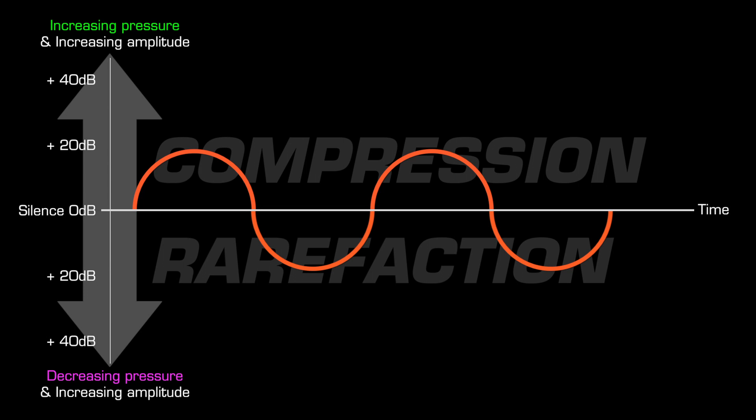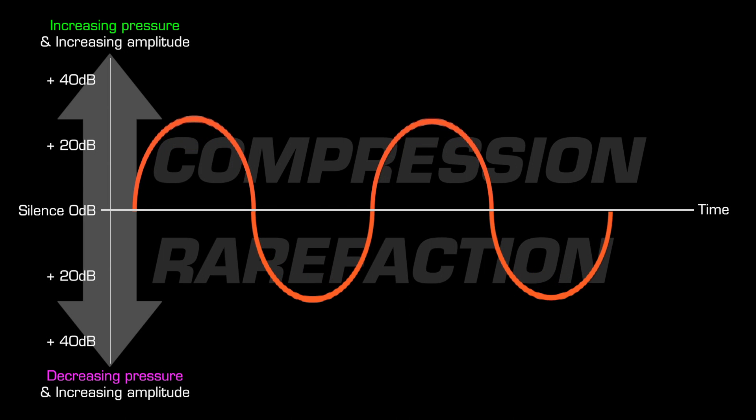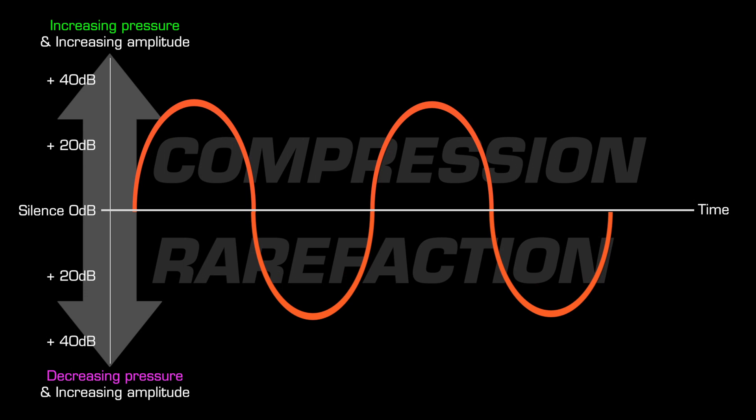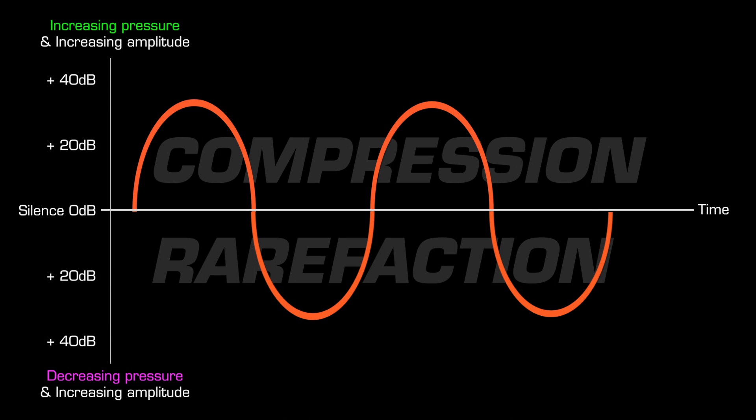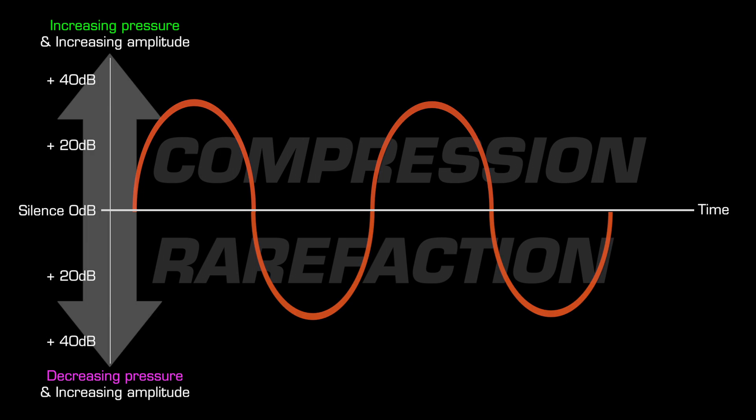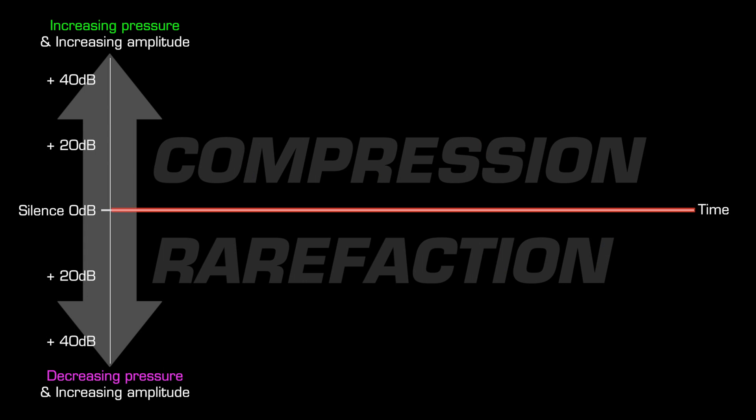The greater the rise and fall, the louder the amplitude and volume. It is critical to note that waveform diagrams show amplitude on a bipolar axis, and that silence is shown as a flat horizontal line, the horizontal axis.